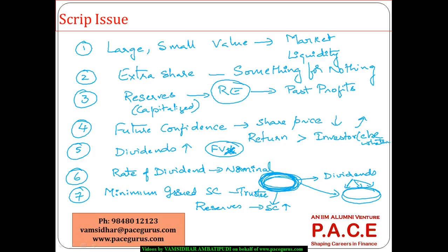In general, a lot of companies tend to keep their stock price in a particular range, and they use this mechanism of a script issue to really work on that trend. And if they have built heavy profits over the past, heavily retained those profits, and built up the reserves, in one year they can very well distribute the same to the investors in the form of additional shares, which could boost the confidence of the shareholders dramatically.